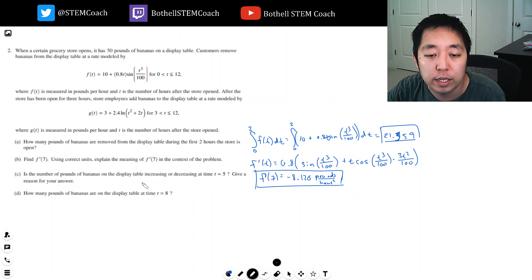Part C: Is the number of pounds of bananas on the display increasing or decreasing at time t equals 5? Give a reason for your answer. Well, the rate of change of the bananas is how many I'm putting on minus how many I'm taking away. So I'm looking at g(t) minus f(t). If I'm putting more bananas on to the display than I'm taking away, then I'm increasing the number of bananas. And if it's negative, then I'm taking away more. So it really depends on which one is bigger.